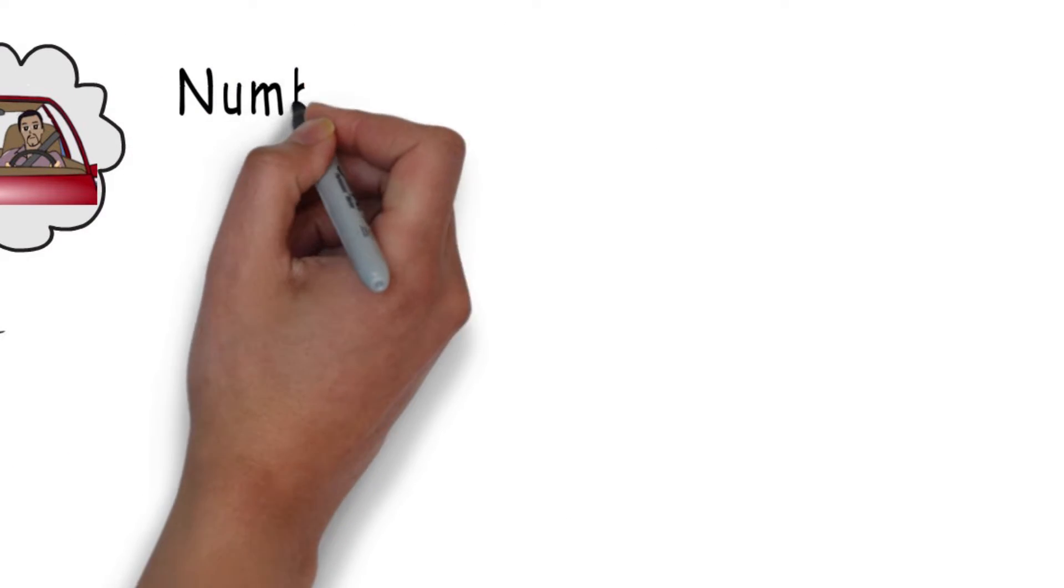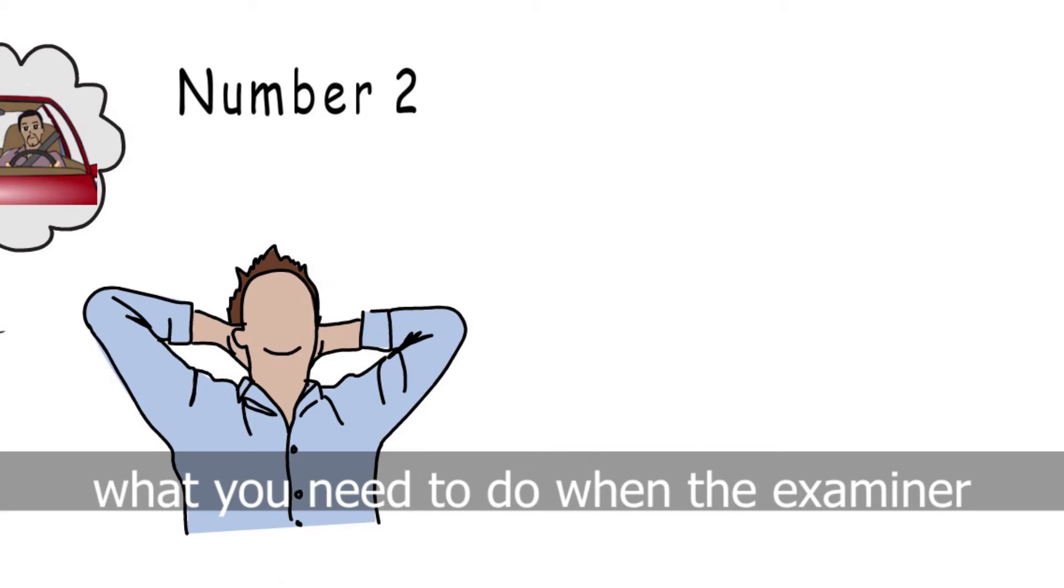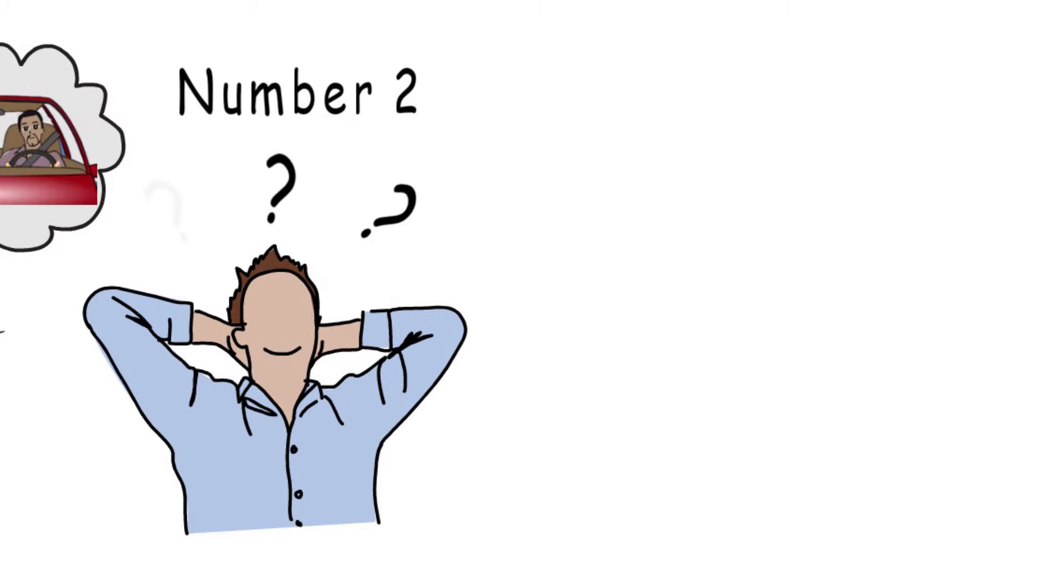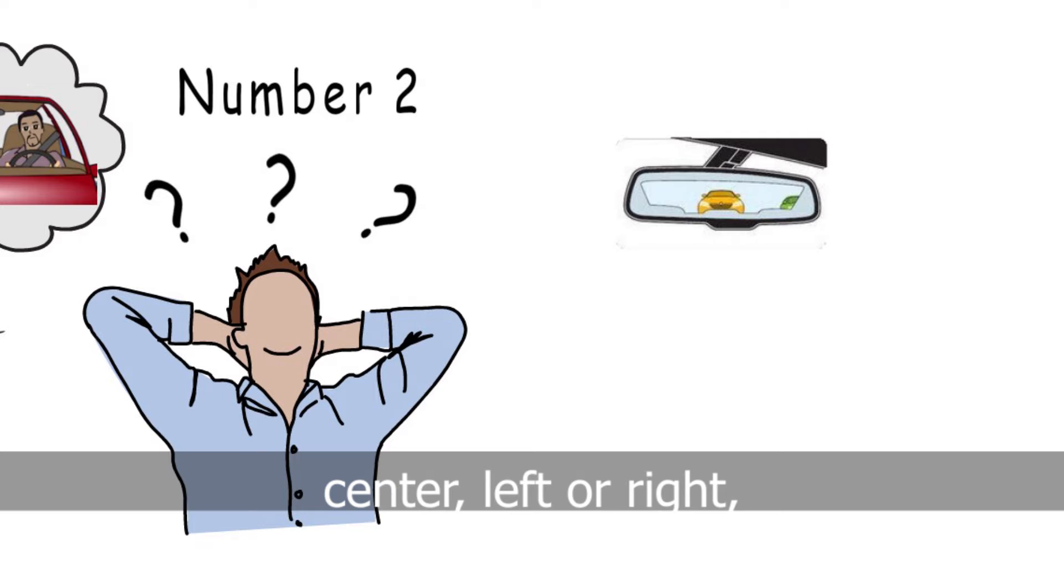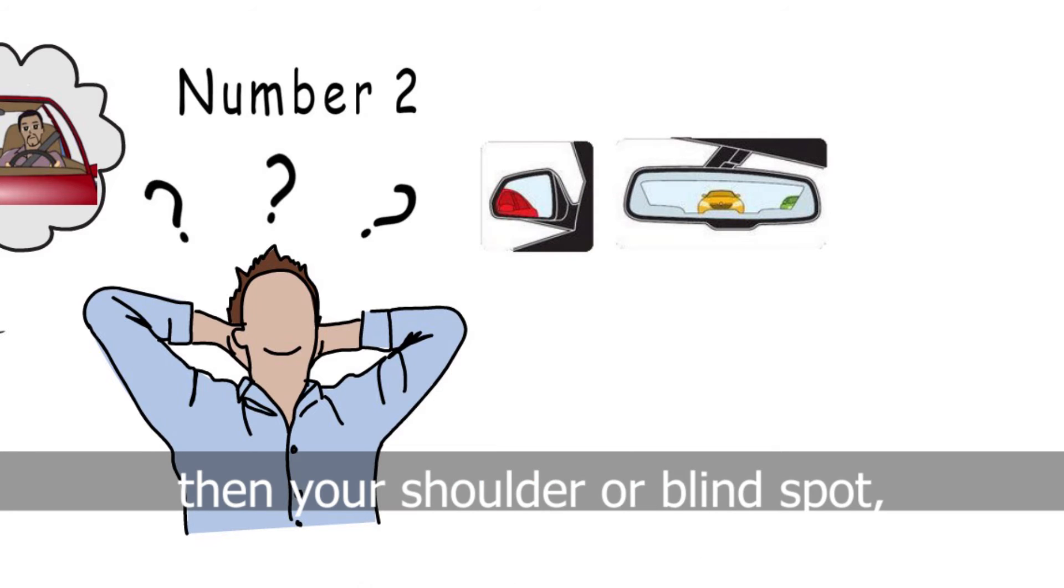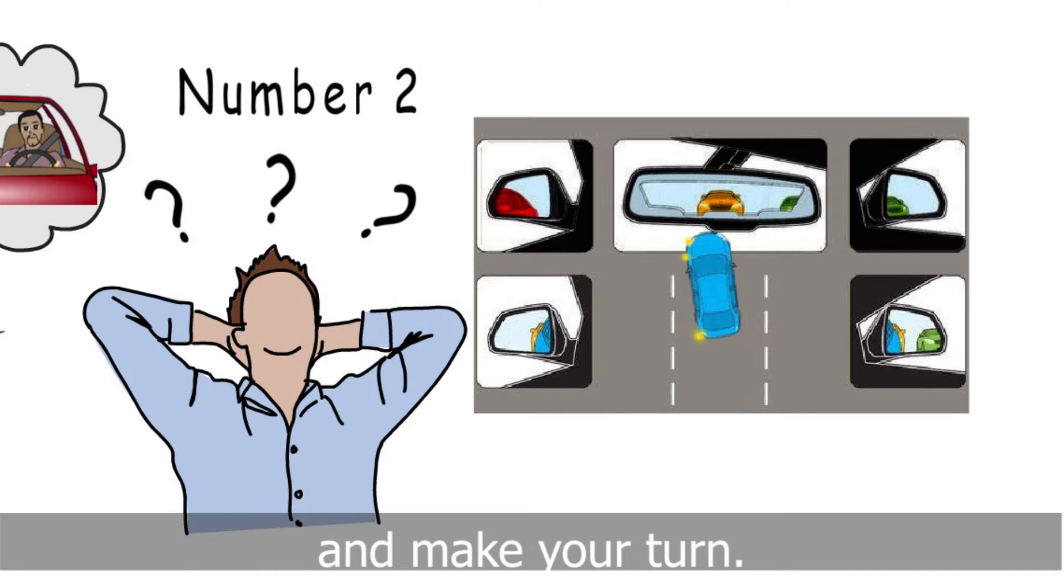Number 2. Always imagine that you are driving, what you need to do when the examiner instructs you a direction. First you need to check your mirror, center, left or right, then your shoulder or blind spot, and then make a signal if the road is clear and make your turn.